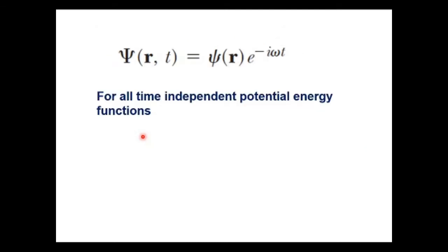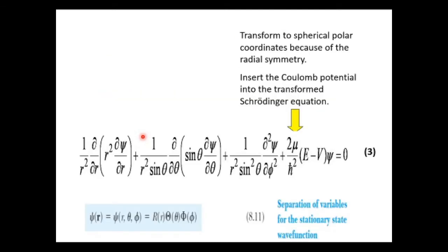After substituting del squared into the Schrödinger equation, we get: 1 by r squared times d by dr of r squared times d psi by dr, plus 1 by r squared sin theta times d by d theta of sin theta times d psi by d theta, plus 1 by r squared sin squared theta times d squared psi by d phi squared, plus 2m by h-cross squared times E minus V times psi equals zero, because of the spherical symmetry.